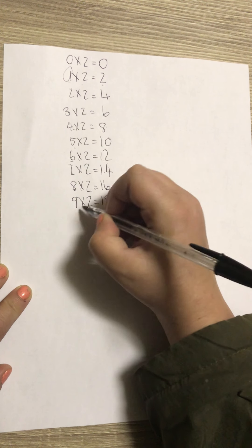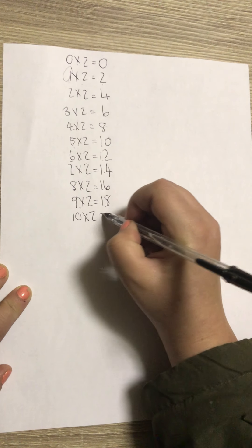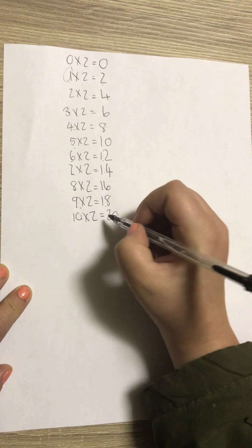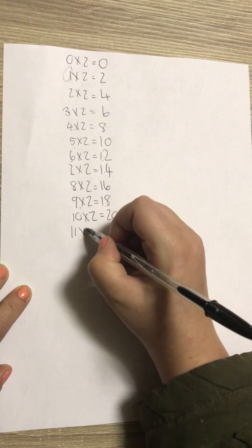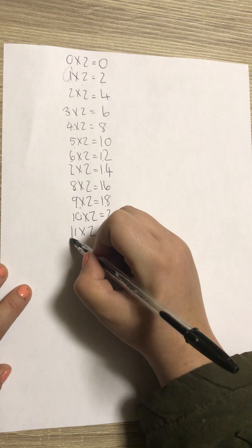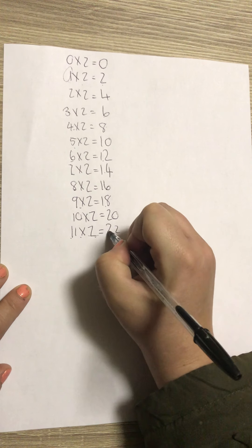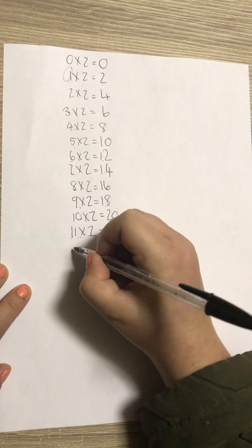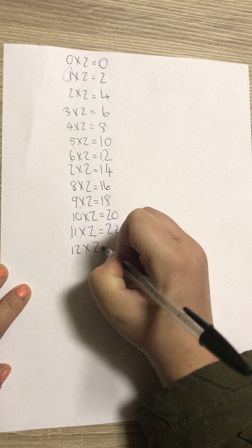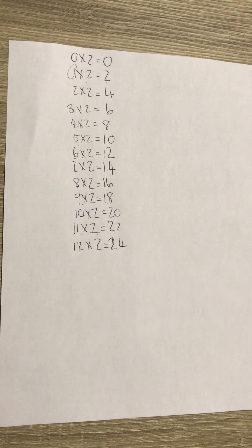Nine times two is eighteen because the double of nine is eighteen. Ten times two is twenty because the double of ten is twenty. Eleven times two is twenty-two, remember with most of the numbers eleven just makes a double, so 22. Twelve times two is twenty-four because the double of twelve is twenty-four.